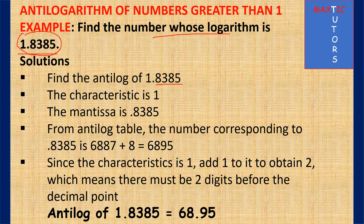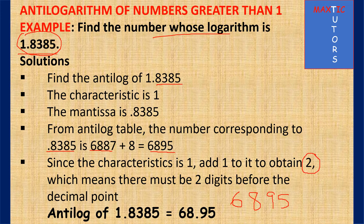When you open to antilog reading tables, 83 under 8, difference 5, will give you 6885. Since the characteristic is 1, for antilog you add 1 to the characteristic, giving you 2. That means we count 2 numbers from the front and put your decimal. So you now have 68.85 as the antilog of 1.8385.